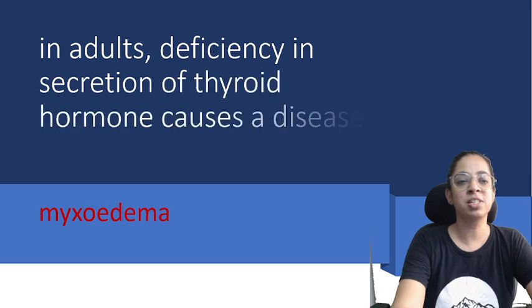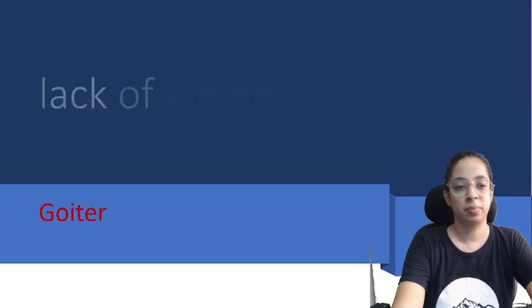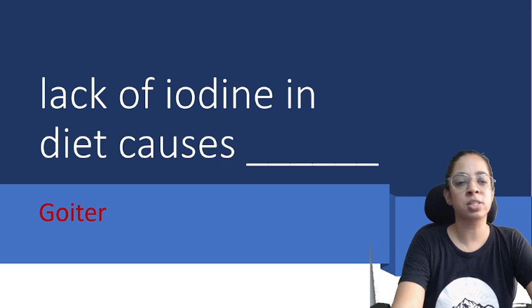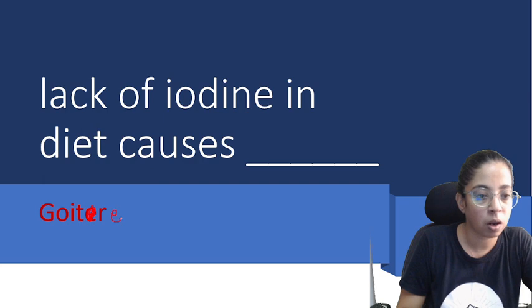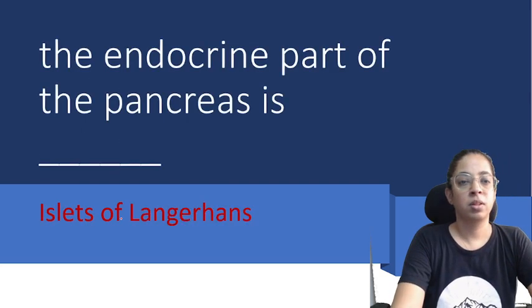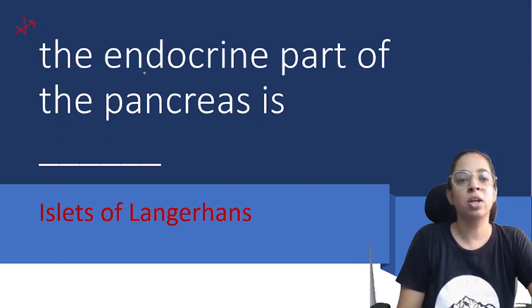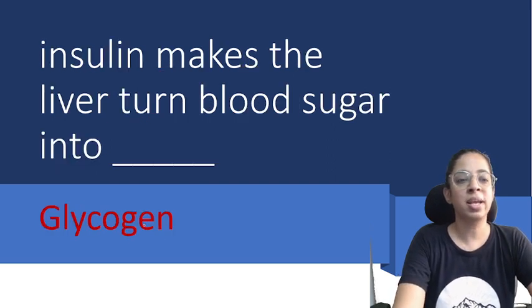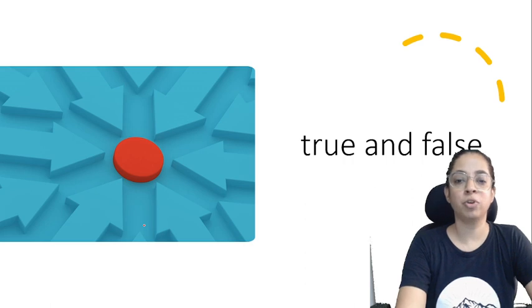In adults, the deficiency in secretion of thyroid hormone causes a disease called myxoedema. Lack of iodine in the diet causes goitre. The endocrine part of the pancreas is the islets of Langerhans — many students get this wrong, so remember it carefully. Insulin makes the liver turn blood sugar into glycogen. Now let's talk about true and false.